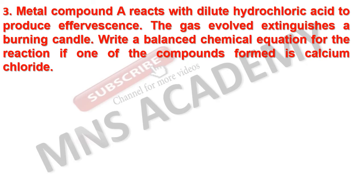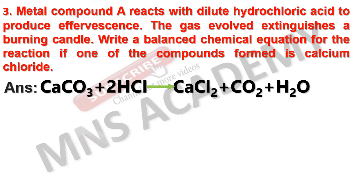Metal compound A reacts with dilute hydrochloric acid to produce effervescence. The gas evolved extinguishes a burning candle. Write a balanced chemical equation for the reaction if one of the compounds formed is calcium chloride. Calcium carbonate reacts with dilute hydrochloric acid to form calcium chloride, carbon dioxide gas — which extinguishes a burning candle — and water. This is the balanced chemical equation.